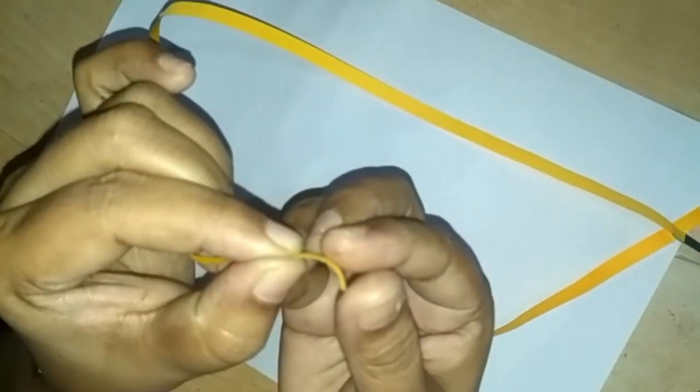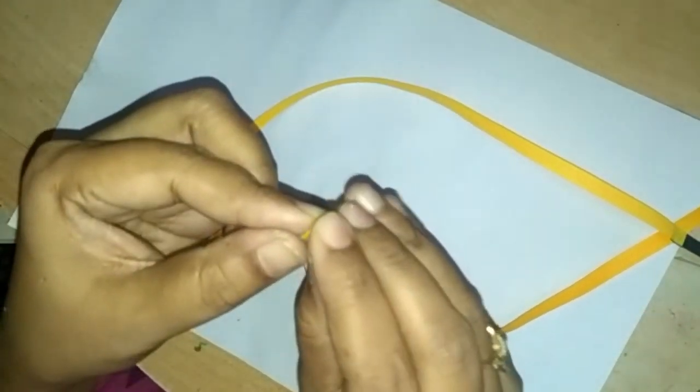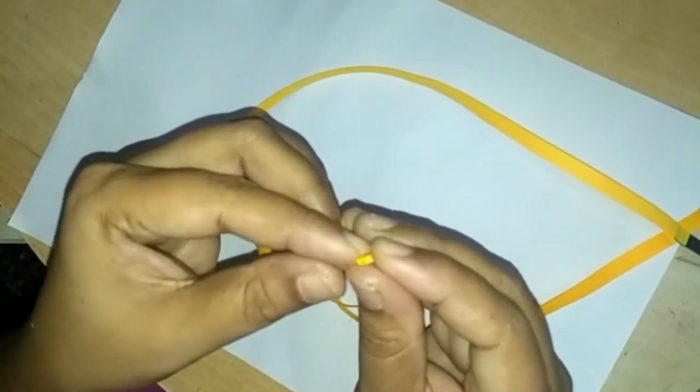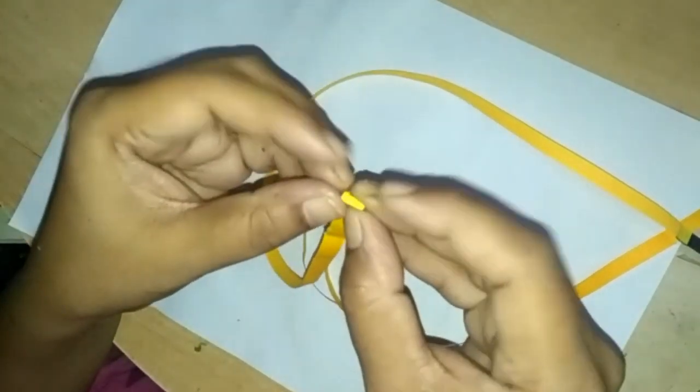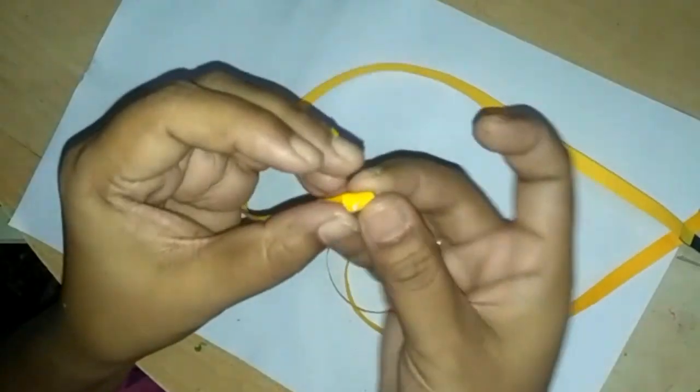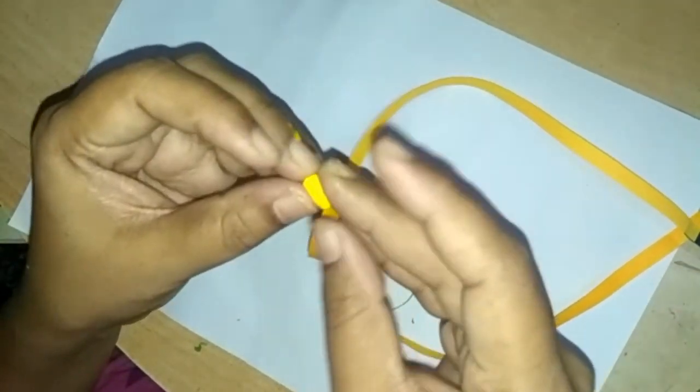Now observe me carefully. Without quilling pen, how I make a roll. Look at my foldings carefully. Hold it with fingers and rotate it continuously in one direction.